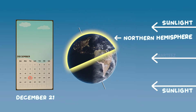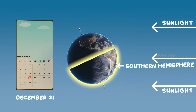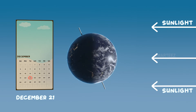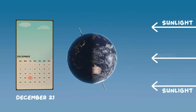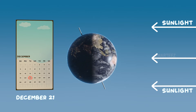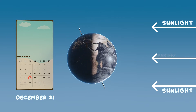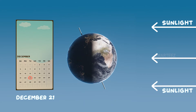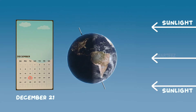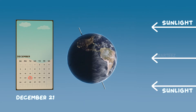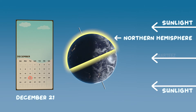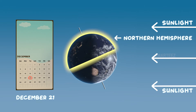We are now experiencing winter here in the northern hemisphere. As you can see, this part receives less sunlight than the southern hemisphere. During winter, the sunlight is available for a shorter time, leading to shorter days. The sunlight is also at a shallow angle, because of the earth's tilt on its own axis.